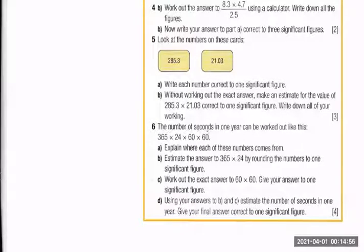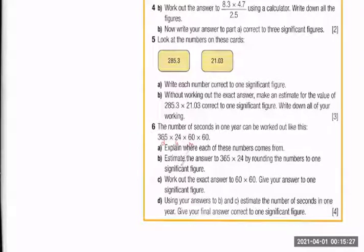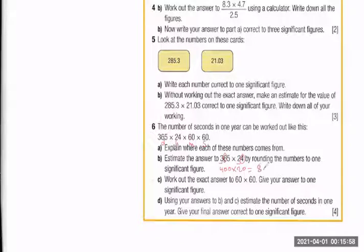Question number six: The number of seconds in one year is worked out as 365 times 24 times 60 times 60. Here, 365 is the number of days, 24 is hours per day, 60 is minutes per hour, and 60 is seconds per minute. To estimate by rounding to one significant figure: 365 rounds up to 400, and 24 rounds down to 20, giving 8000.